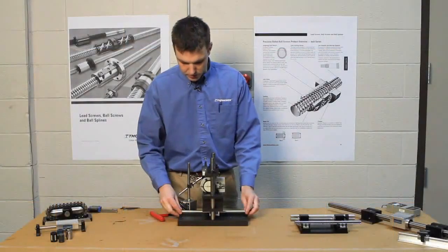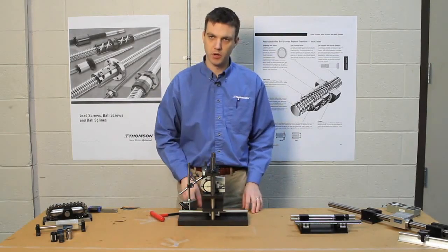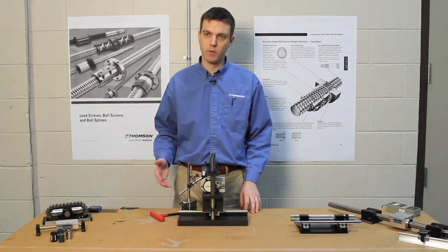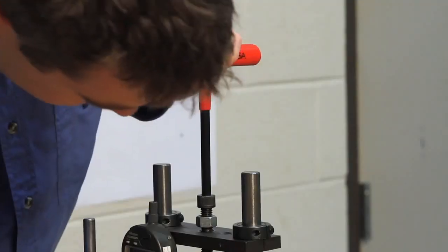In this case we are going to be showing how the deflection characteristics vary from round rail to square rail. One advantage square rail has over round rail is because it's much more stiff it'll deflect a lot less once the load is actually applied.